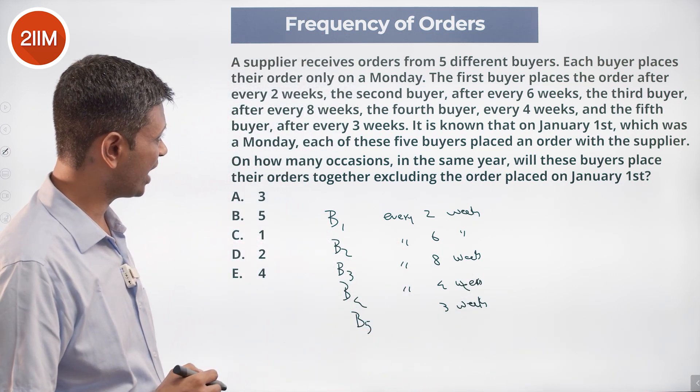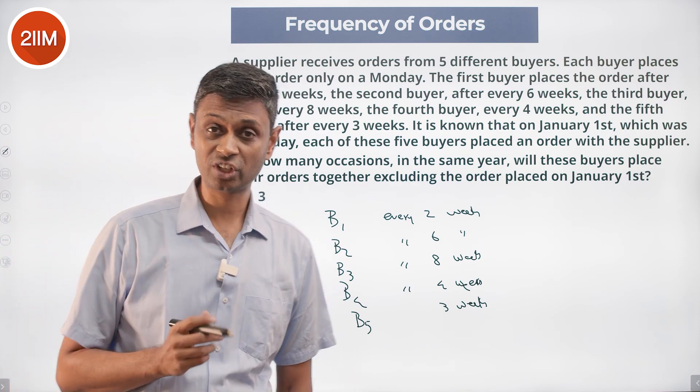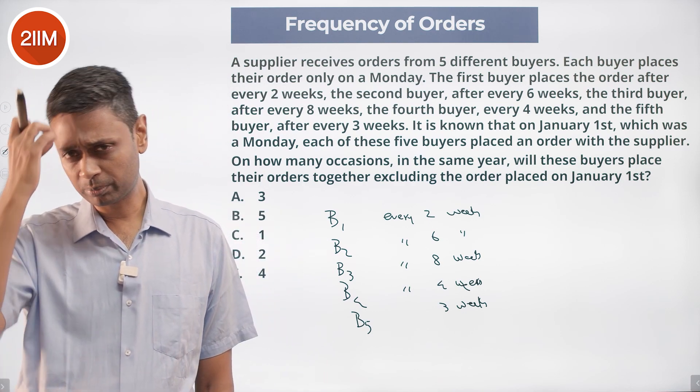It is known that on January 1st, which was a Monday, each of these five buyers placed an order with the supplier. Nice, Jan first is a Monday and all five of them placed an order on that day.